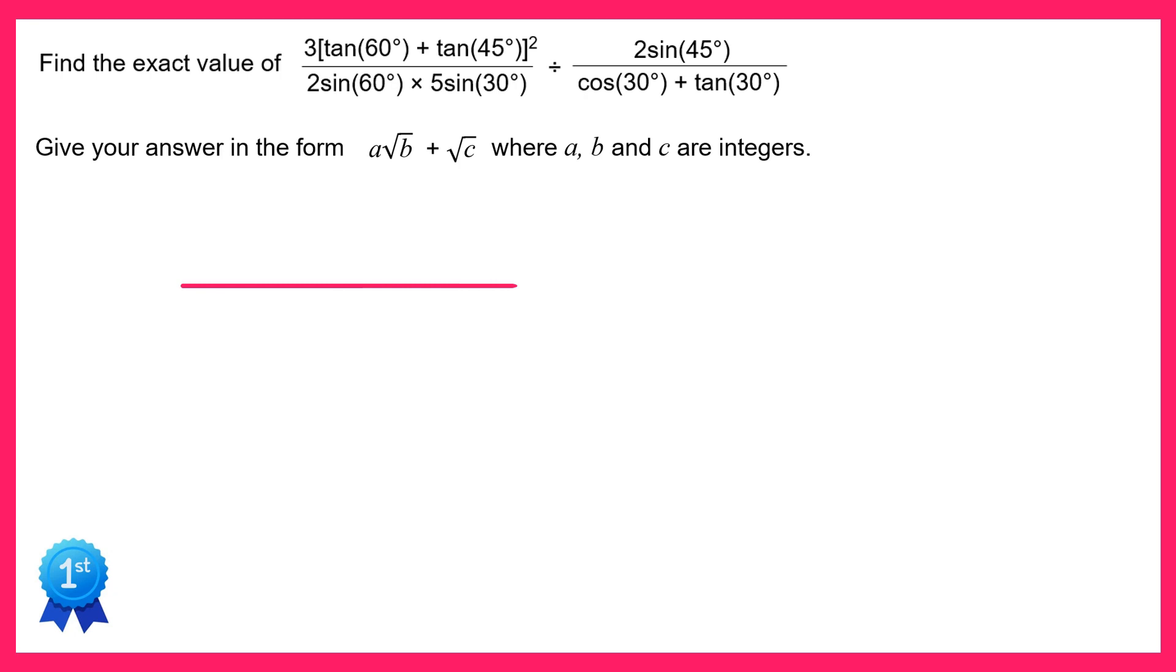On the numerator we have 3 then a bracket squared and inside that bracket we've got tan 60° which is square root 3 and tan 45° which is 1. Now onto the bottom of this fraction we've got 2 times sine 60°, while sine 60° is square root 3 over 2, and this is times by 5 and then times by sine 30° which is 1 half.